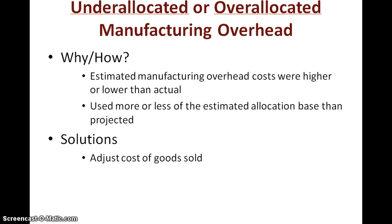What do we do with it? We adjust the over-allocated or under-allocated amount to cost of goods sold, so it all evens out in the end. We write it off to cost of goods sold. In the next section, we're going to take a look at the journal entries so you know how to adjust cost of goods sold.